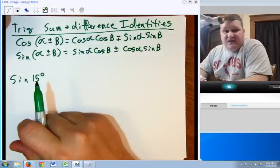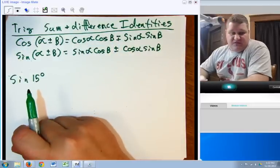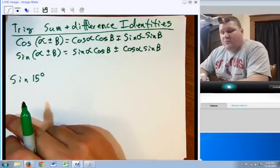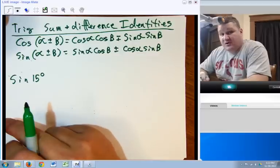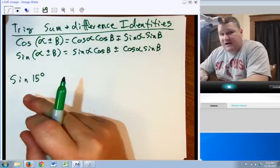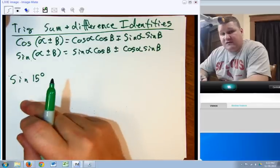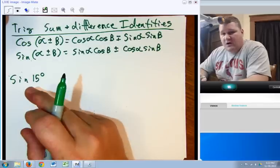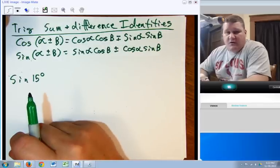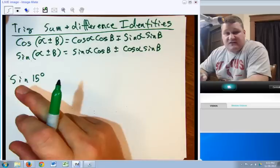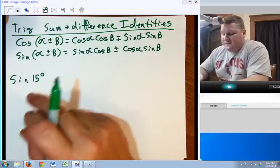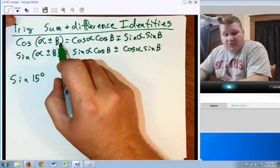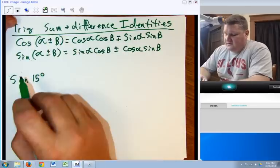In this case, we're going to start dealing with sum and difference identities. Previously, you only had x. In this case, we're actually going to have two different angles going on, because what we need to do is we need to